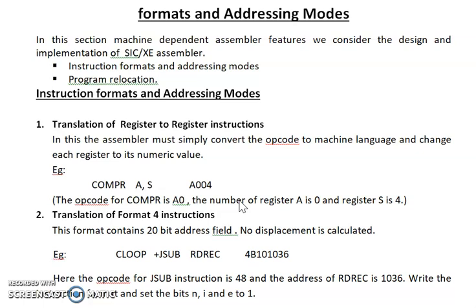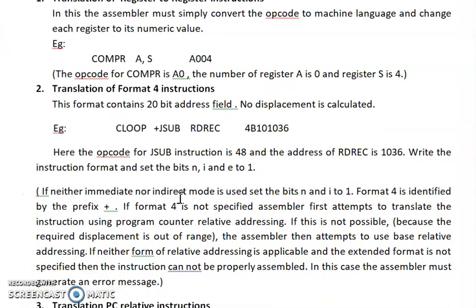When the format is a 4-byte instruction (format 4), the assembler will first check for a prefix plus symbol. If there is a plus symbol as a prefix then it is format 4. If format 4 is not specified, the assembler will go for PC-relative addressing. If PC-relative addressing is not possible due to the displacement value, it will try base-relative addressing. If both relative addressing modes are not available and extended format cannot be used, the assembler will give an error message.